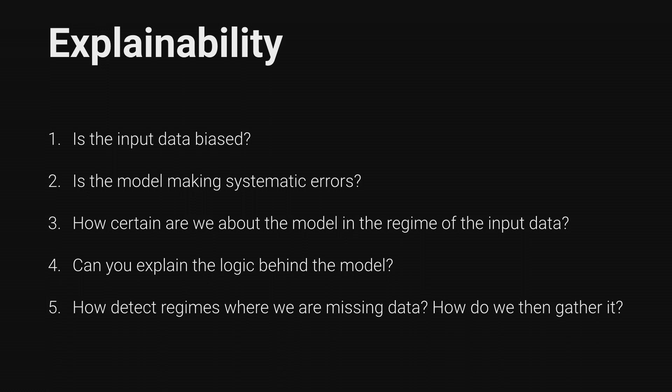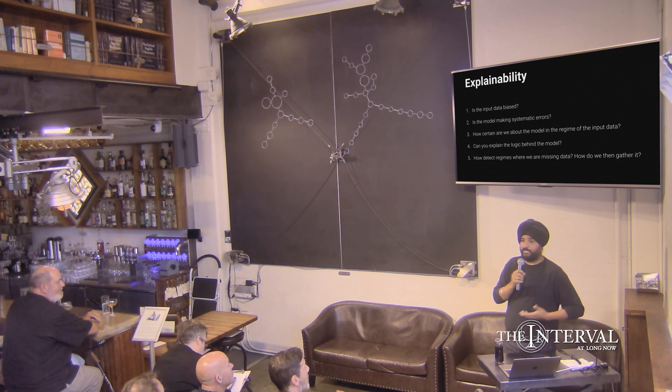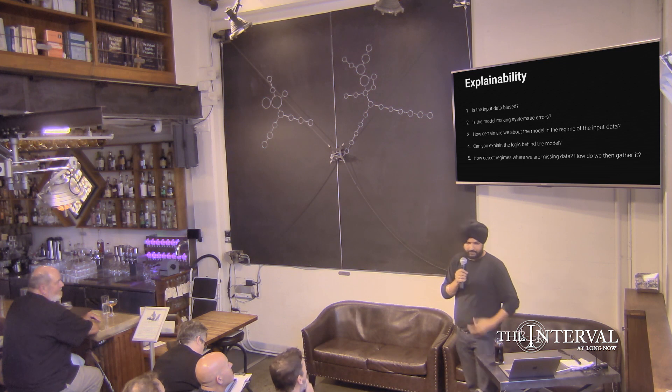The second is, is the model making systematic errors? So is it the case that whenever it's raining outside, the model is just showing me weird news on Google News? That doesn't happen, but that's the kind of thing you would like to know.